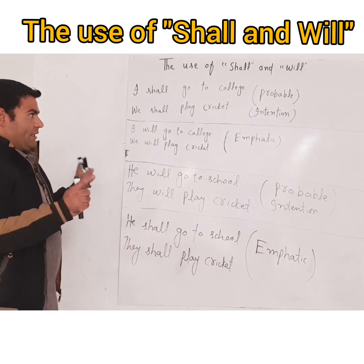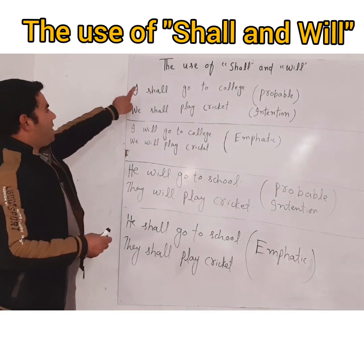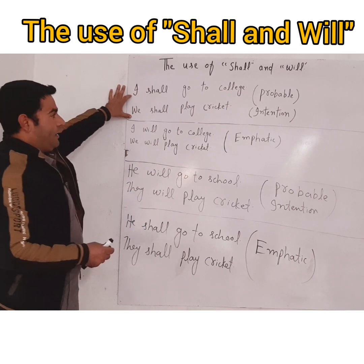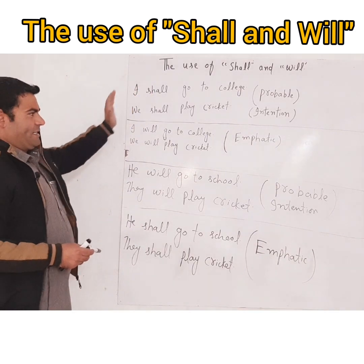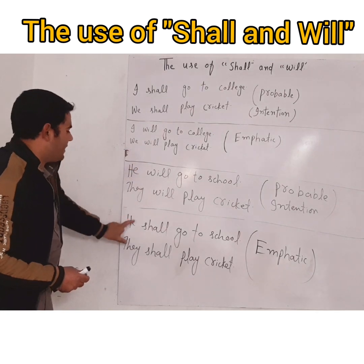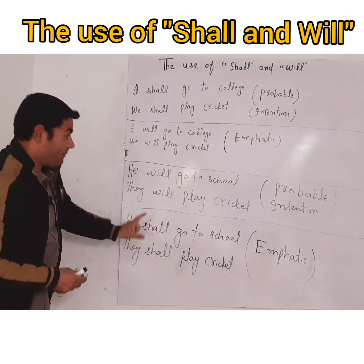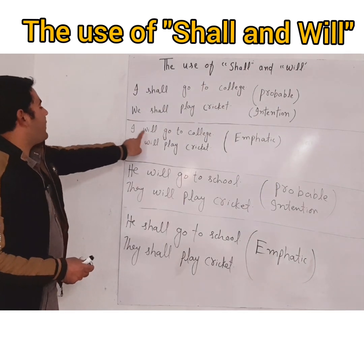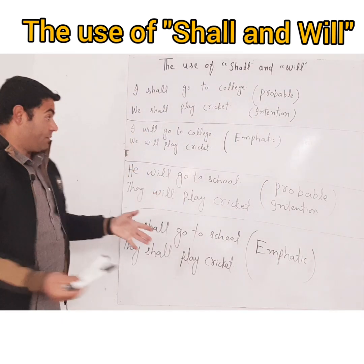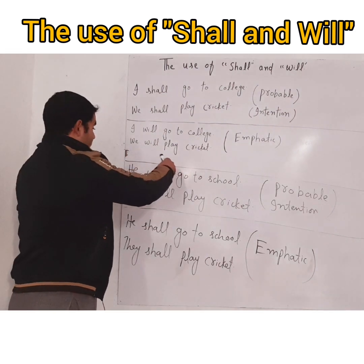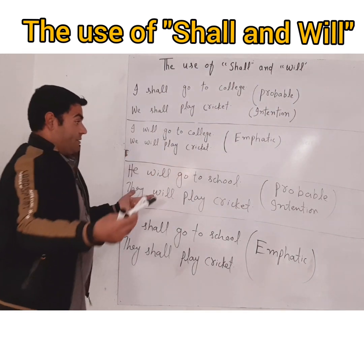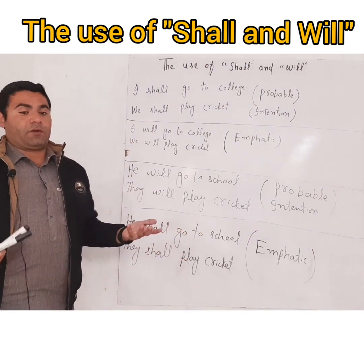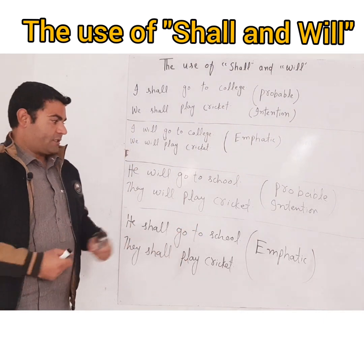Let me give you the summary: just think about the opposite. You use 'shall' with 'we' and 'I' — it's just your intention. But when you use 'shall' with other subjects, it becomes emphatic. And when you use 'will' with 'I' and 'we' — it's emphatic. But when we use 'will' with he, they, and other subjects, it's not emphatic — it's just a probable situation and intention. Thanks a lot, keep watching.